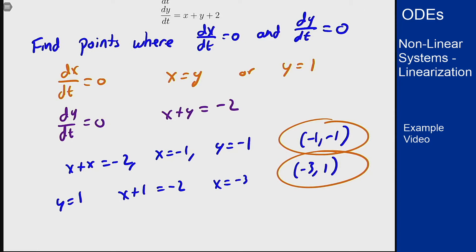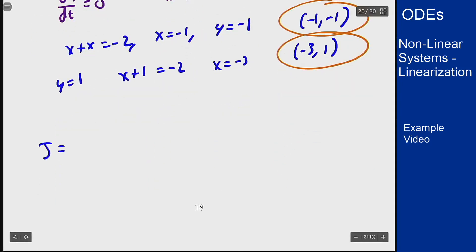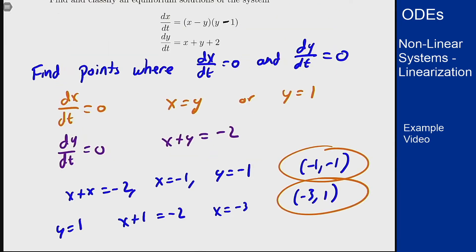Now to classify we want to find the Jacobian matrix which is given by partial f with respect to x, partial f with respect to y, partial g with respect to x, partial g with respect to y. Going back to our functions, calling this one f and this one g.